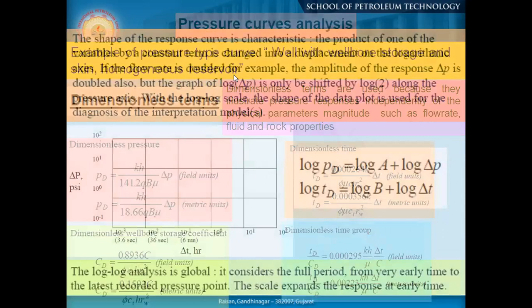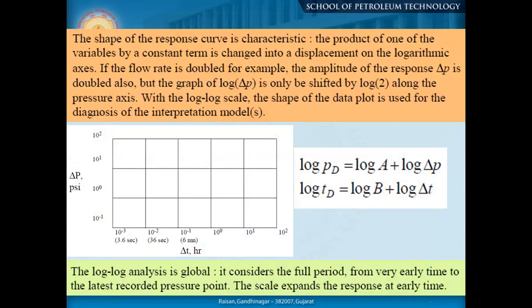This is a log-log plot of delta-P versus delta-t. In most well test data studies, we plot in this graph. The log-log analysis is global — it considers the full period from very early time to the latest recorded pressure in the well test. Once you plot it with your normal data you can do it in an Excel spreadsheet. You see the dimensionless parameters: delta-P with the wellbore storage effect C, dimensionless time T_D with normal time t — these are the x-axis parameters.